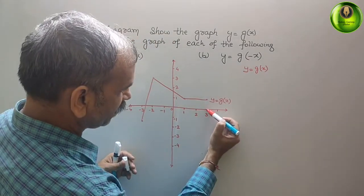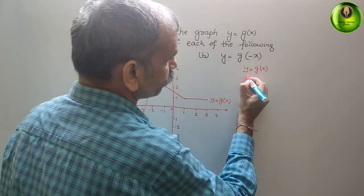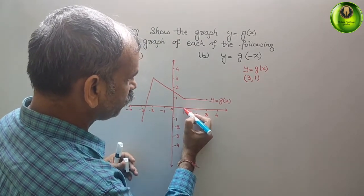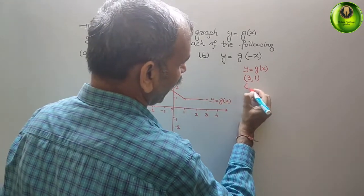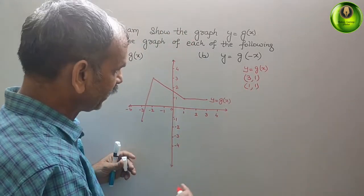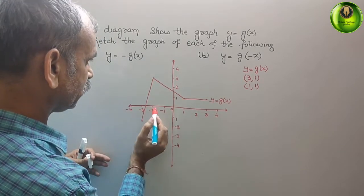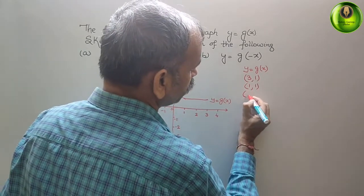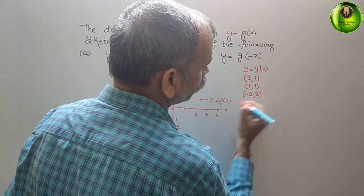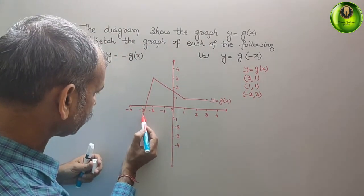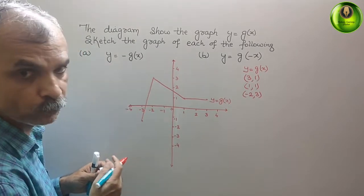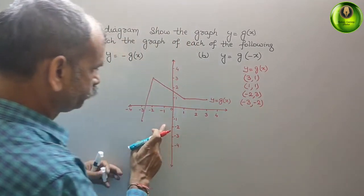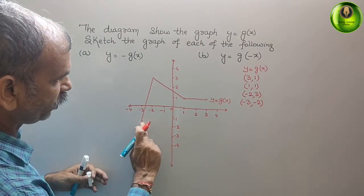From the graph of y = g(x), we can identify the key coordinates. The first point is (3, 1). The next point is (1, 1). Then we have (-2, 3). And finally (-3, -2).